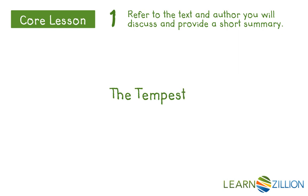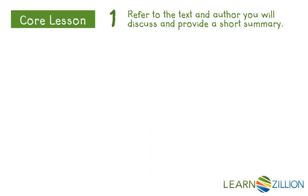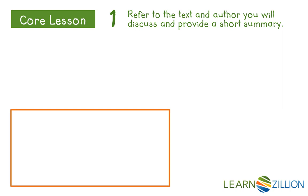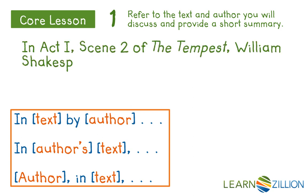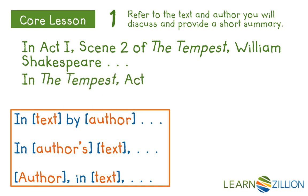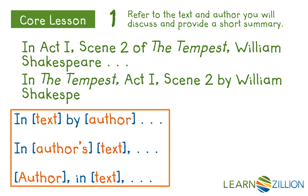When mentioning the title of a text you will want to either underline or italicize it. If you're writing by hand underlining is preferred, but if you're typing you should italicize as this is most common. To introduce the text and author, here are some basic sentence starters that we can use. I'm going to use one of these — remember we're talking about a specific scene — so: "In Act 1, Scene 2 of The Tempest, William Shakespeare..." or "In The Tempest, Act 1, Scene 2, by William Shakespeare."